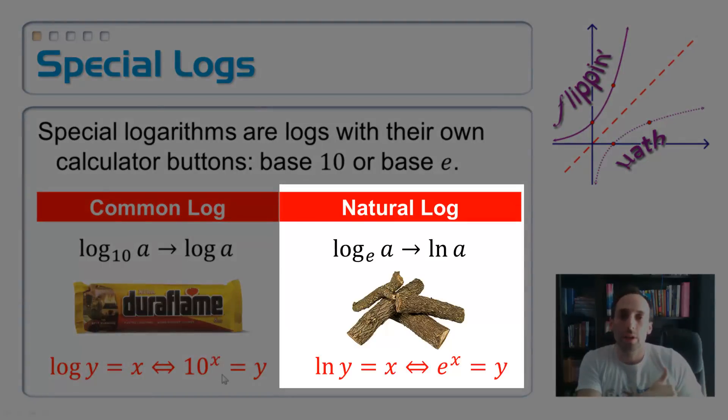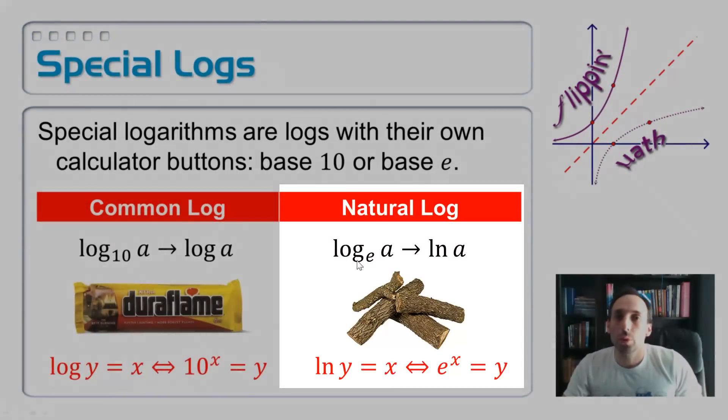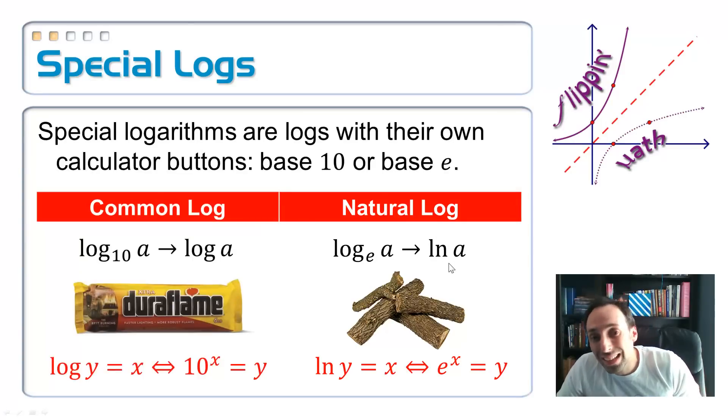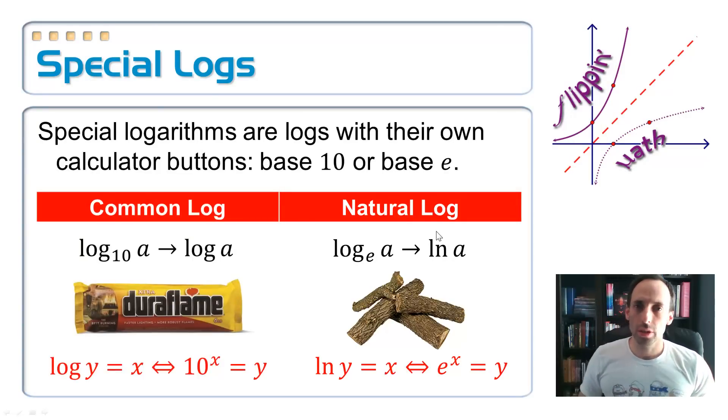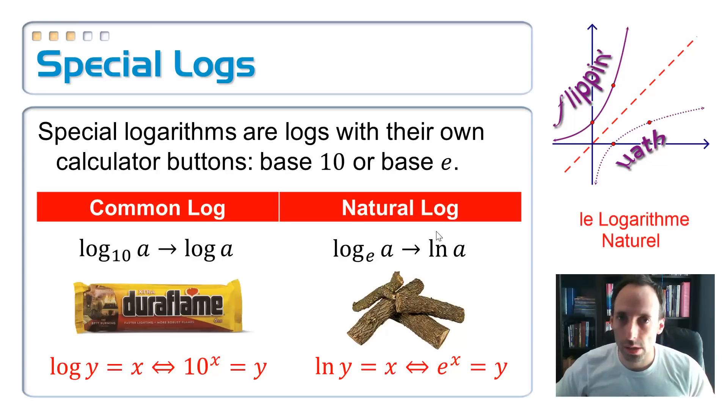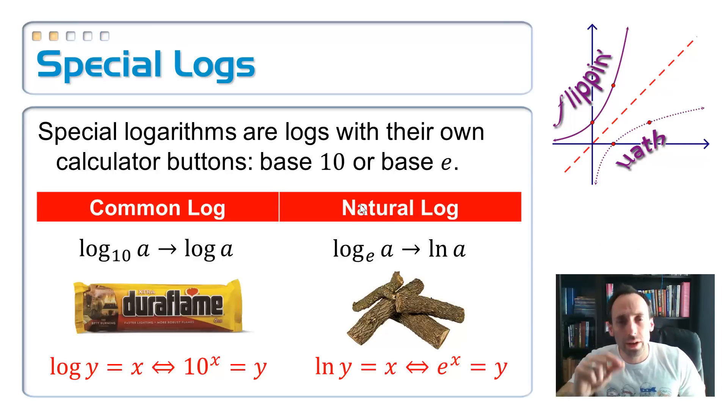Over on the right-hand side, we've got our natural logs. Our natural log is base e, and so its notation is a little ln for natural log. So actually, I think French, and it goes logarithm naturel. Anyway, so when you see ln, the base is e, the natural base. So down below in red, the natural log of y is equal to x can be rewritten in exponential form as e to the x is equal to y.